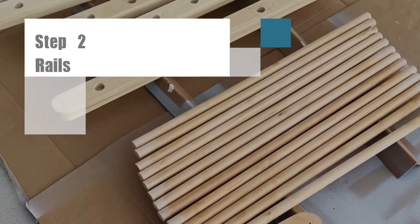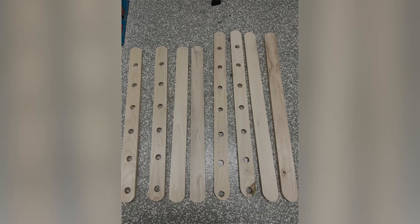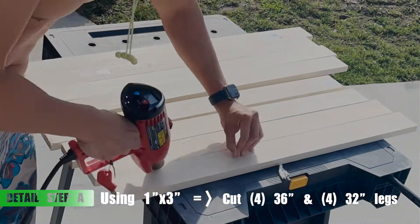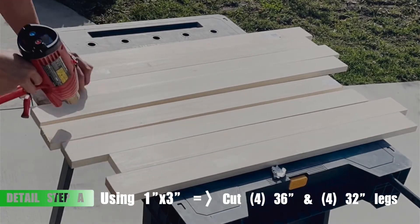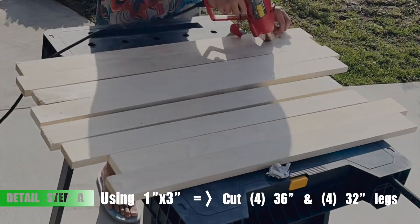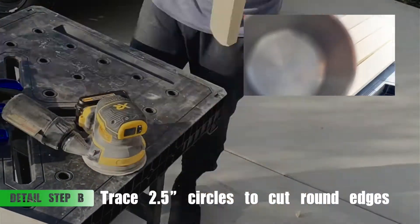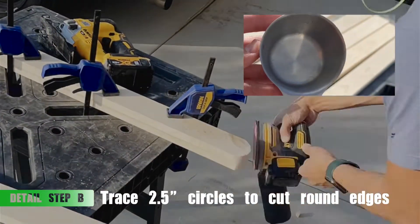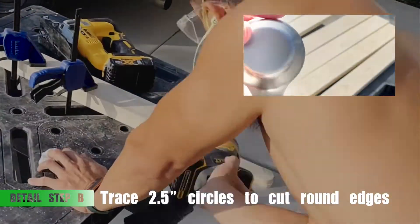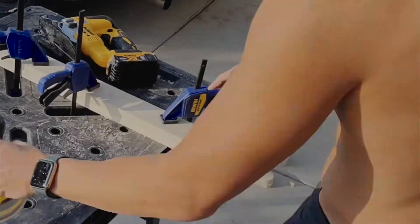Step 2, now we're going to focus on the rails. Let's start with an overview. We're going to cut out 8 pieces, 4 for the short legs and 4 for the long legs. We'll go over shortly why. First detailed step, using a 1x3 board, cut out 4 pieces of 36 inches and 4 pieces of 32 inches. These are for the rails. Now using a compass or the 2.5 inch circle tool that you use for the triangle, round all the edges of the rails that you cut out. Use a jigsaw to cut it out and then use an orbital sander to smooth out the edges.